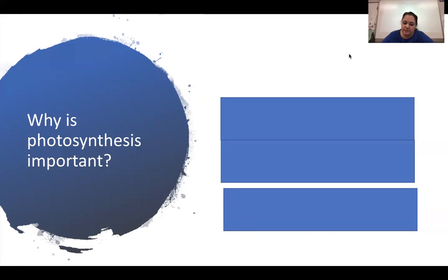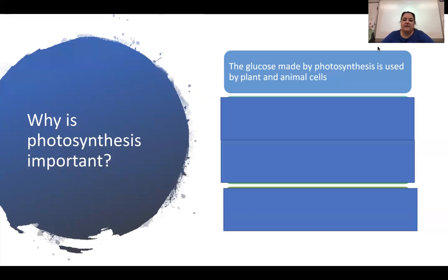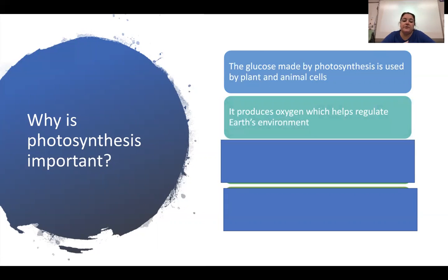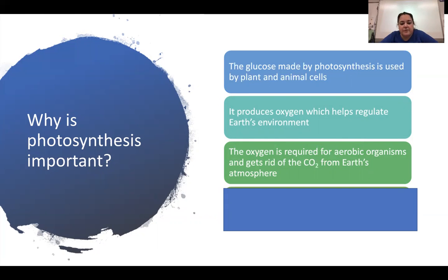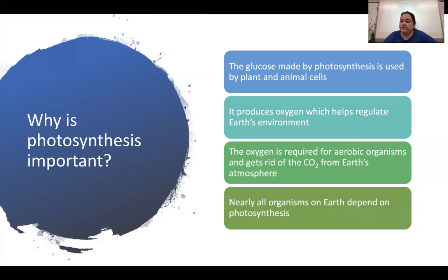Why is photosynthesis important? The glucose made by photosynthesis is required for life — it's used by plant and animal cells for energy via cellular respiration. Photosynthesis also produces oxygen, which is important for our atmosphere and required for aerobic organisms. Additionally, photosynthesis removes carbon dioxide from the atmosphere that was created by cellular respiration.